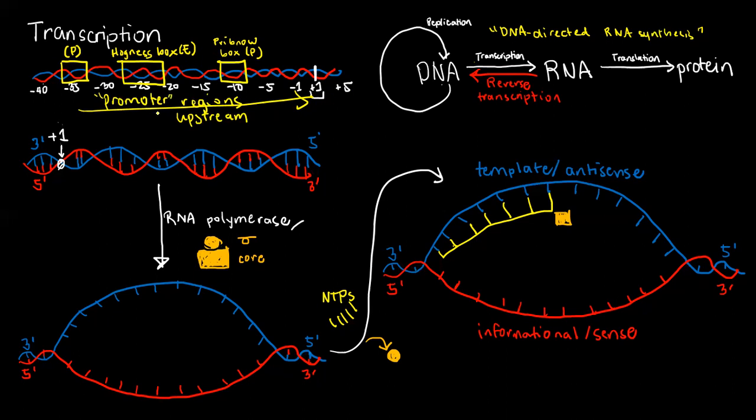Significant promoter regions include the negative 35 area that is only for prokaryotes, the Hagnus box, or sometimes called the TATA box (T-A-T-A box), which is around negative 20 to negative 30 for eukaryotes.